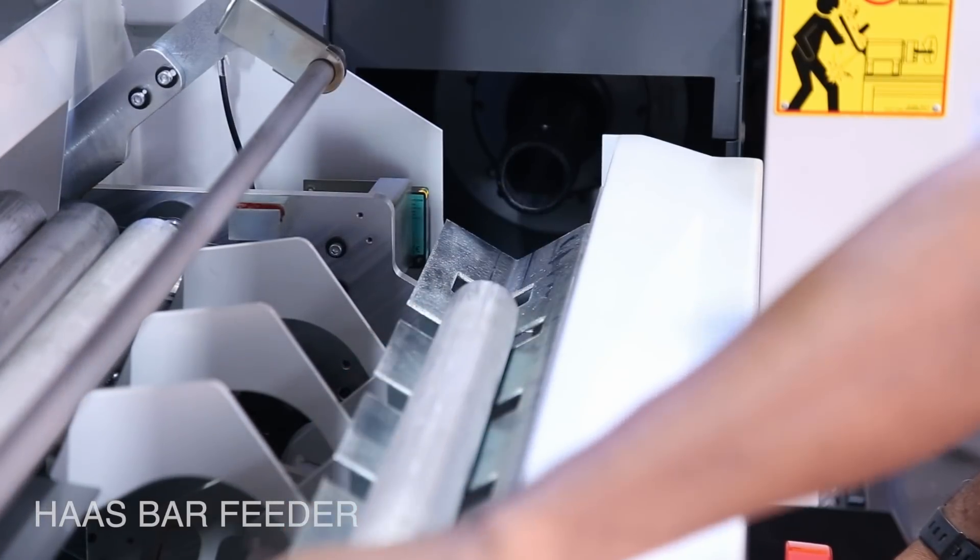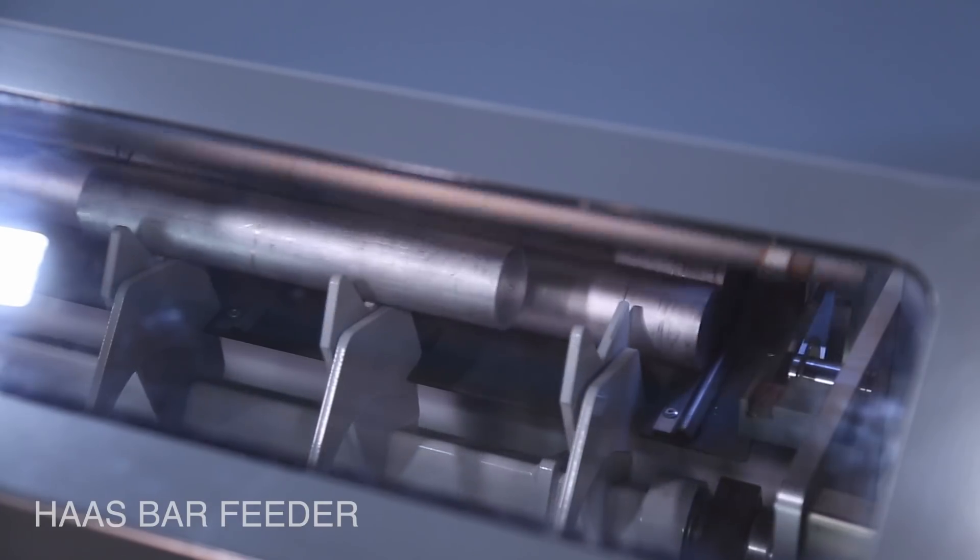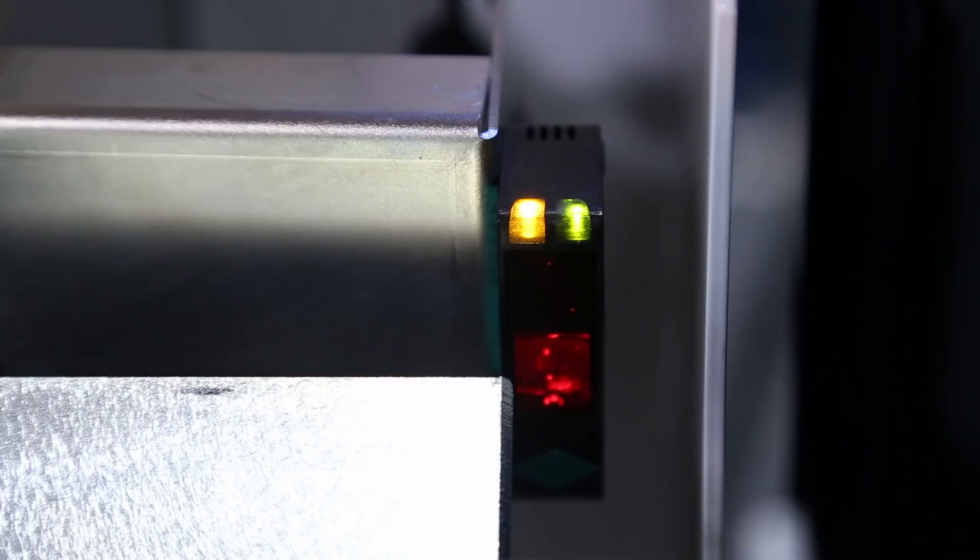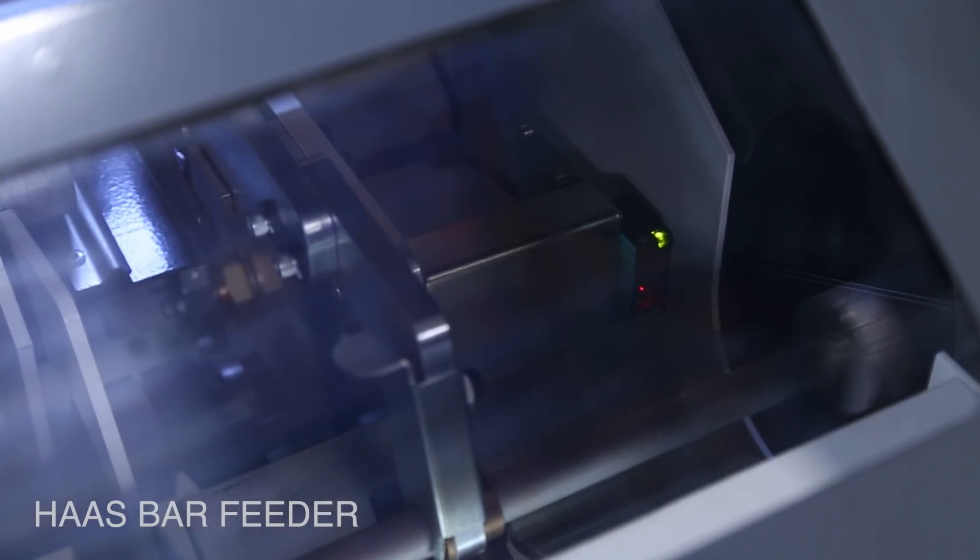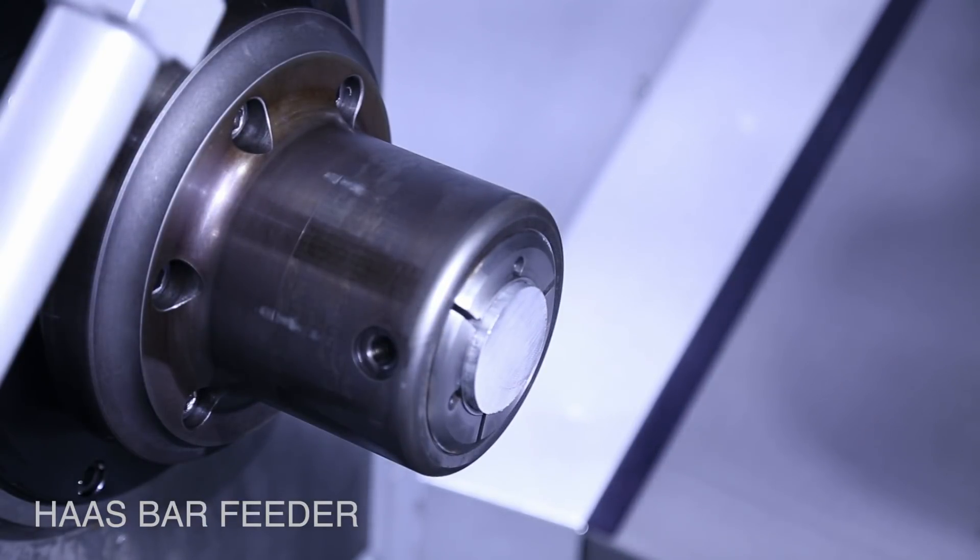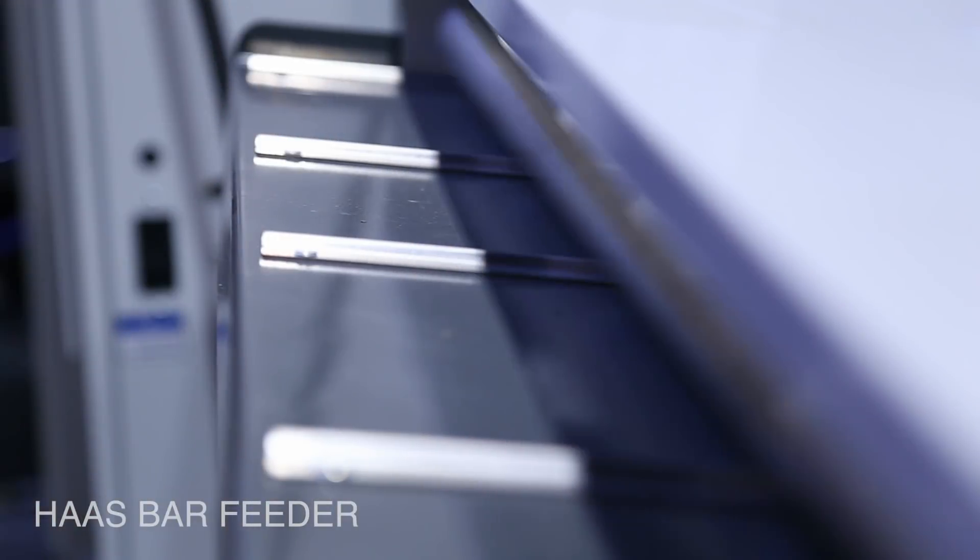The bar feeder's optical sensor means that you can load random length bars into the tray—no need to worry if they're all the same length. Stainless steel runners guide your stock into the loading tray.